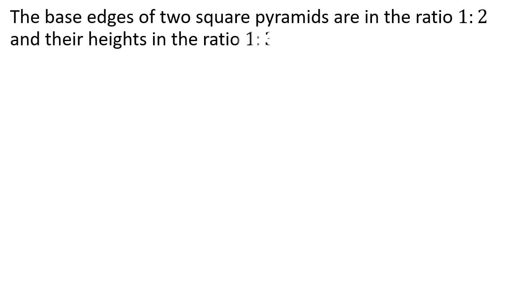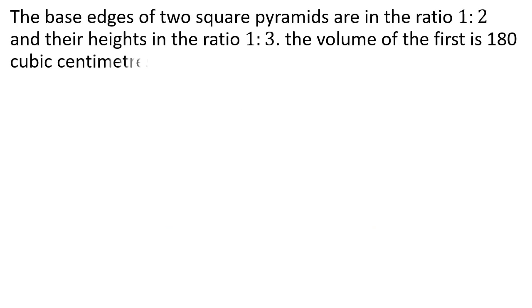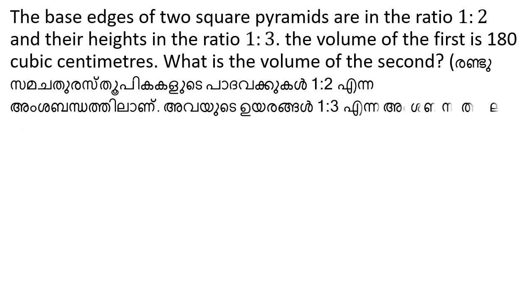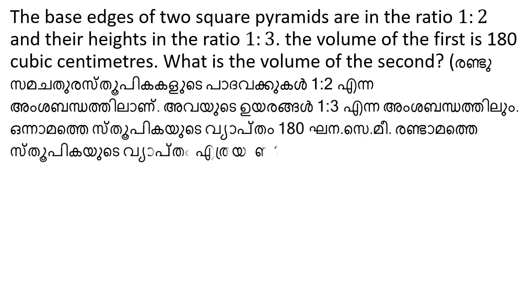The base edges of two square pyramids are in the ratio 1:2 and their heights in the ratio 1:3. The volume of the first pyramid is 180 cubic centimeters. What is the volume of the second?